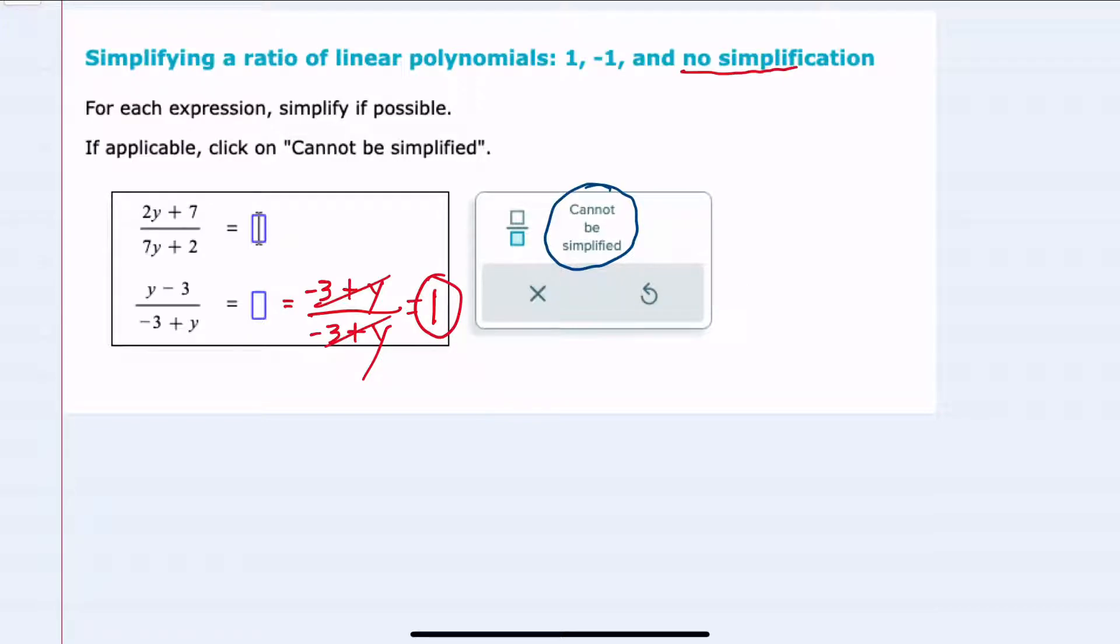So we had a situation where there was no simplification and an example where there was 1. Just to give an example of where we have a minus 1,